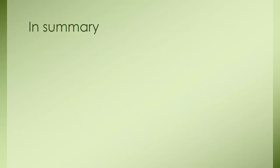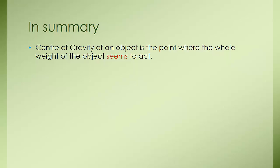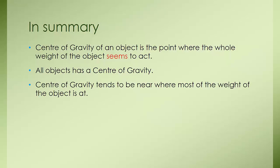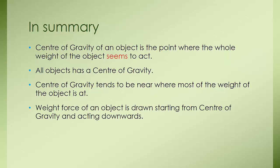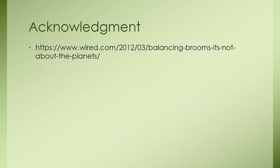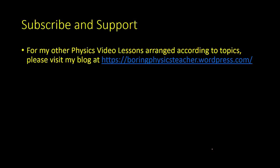In summary: the center of gravity of an object is the point where the whole weight of the object seems to act. All objects have a center of gravity, and it tends to be near where most of the weight of the object is. The weight of the object is drawn starting from the center of gravity and acting downwards. Please subscribe and support the channel. For other physics video lessons arranged by topic, visit foreignphysicsteacher.wordpress.com.